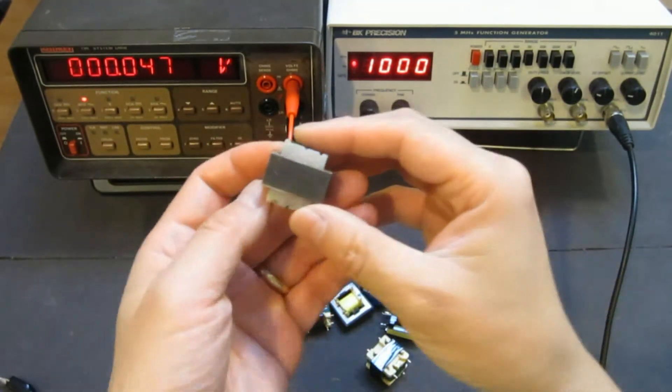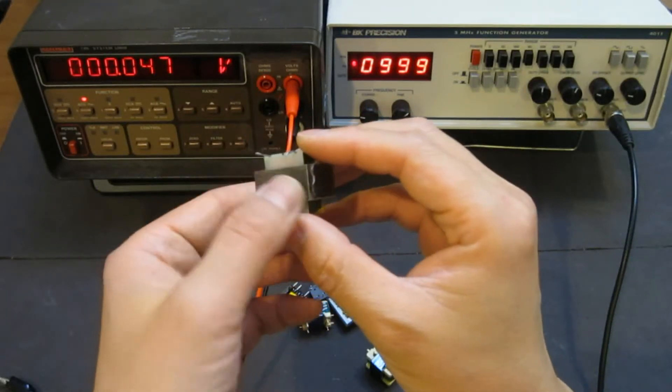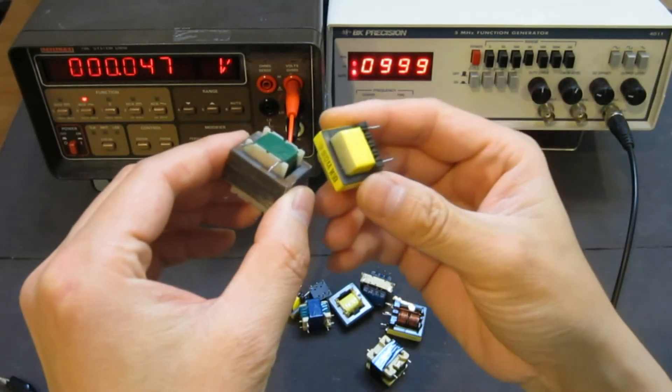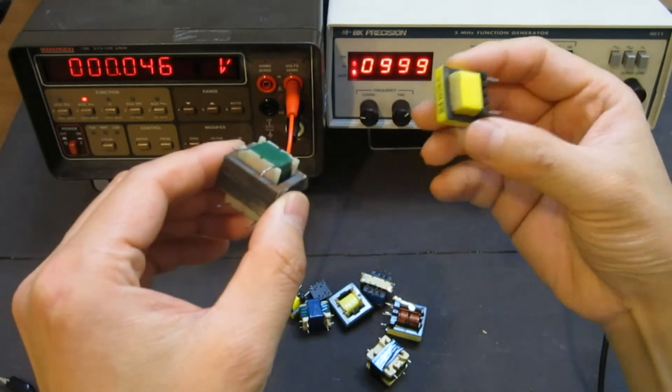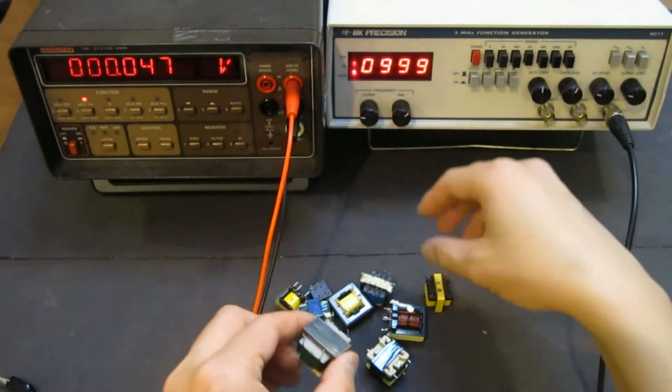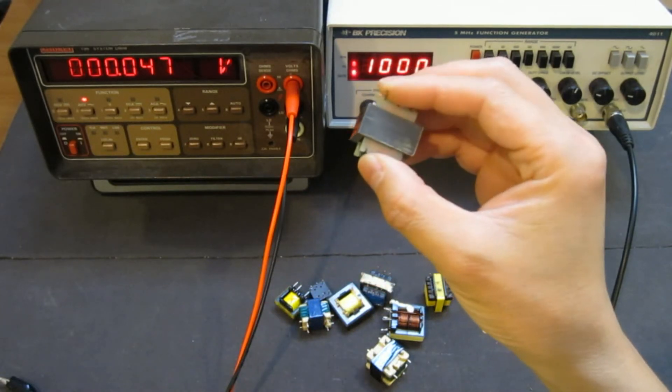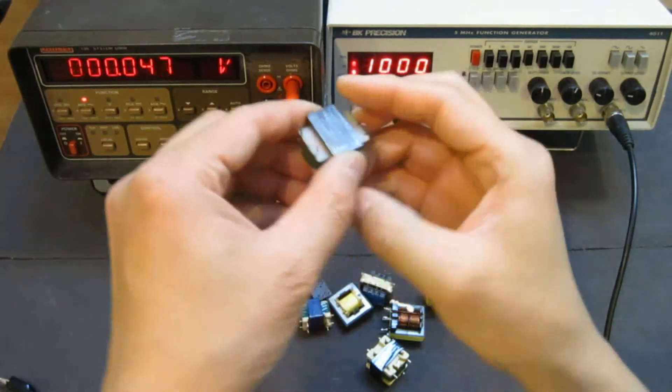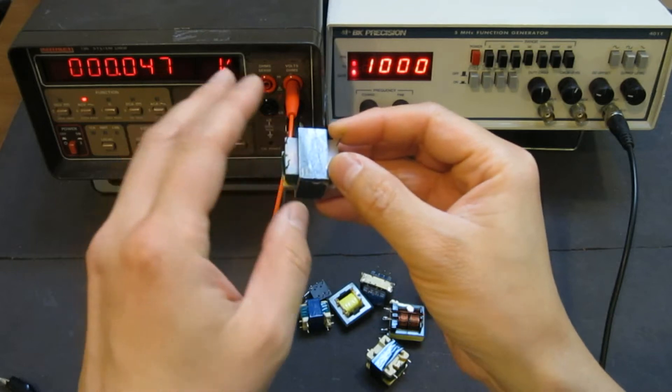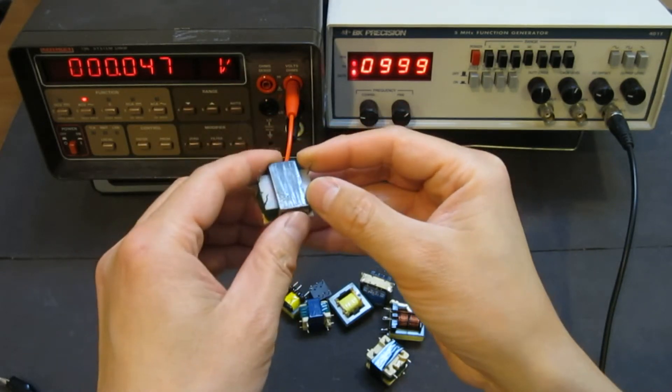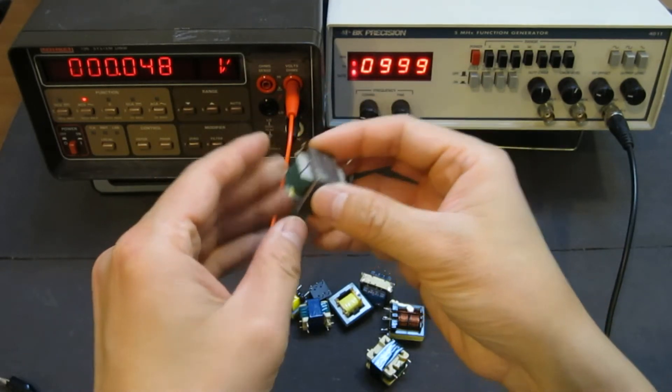So these kind of laminated iron core operates at a much lower frequency than this kind of ferrite core transformers. So as you will see later, actually the ratio, the voltage ratio between output and input is not fixed over a span of several kilohertz of frequency.